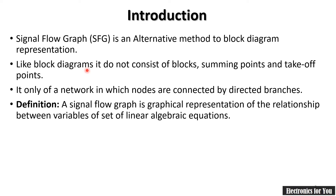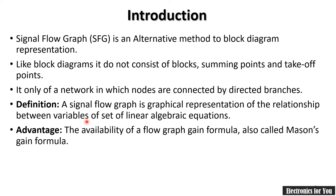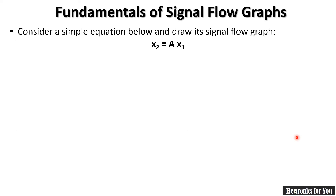The definition of signal flow graph: a signal flow graph is a graphical representation of the relationship between variables of a set of linear algebraic equations. The advantage of signal flow graph is the availability of a direct formula called Mason's gain formula, which is used to calculate the transfer function. In block diagram reduction you apply a set of rules, but in signal flow graph you apply Mason's gain formula directly to find the solution.